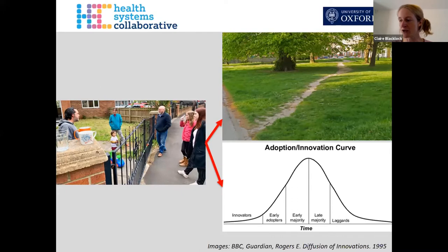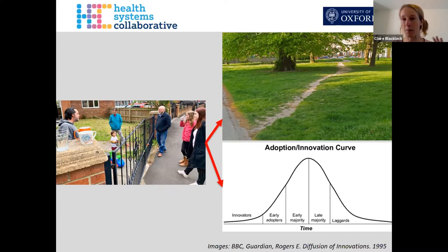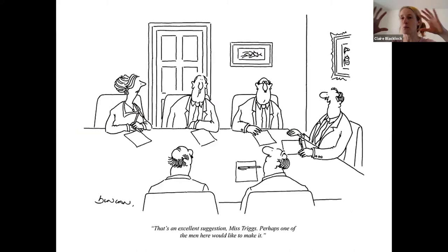Why are these informal social interactions important? We know from existing sociological theory that the people we interact with on a day-to-day basis influence our own behaviours. In healthcare settings, there are lots of challenges and constraints associated with day-to-day practice, so the way we find our way and work out the behavioural norms we adopt are influenced by those around us. The people we spend our time with also influence how our behaviour changes — an example is Rogers' diffusion of innovation model, where people are much more likely to adopt an innovation once their peers have already adopted it. Also, the general structures of people's ties can disadvantage certain individuals or groups. [Cartoon quote: 'That's an excellent suggestion, Miss Triggs — perhaps one of the men here would like to make it.']